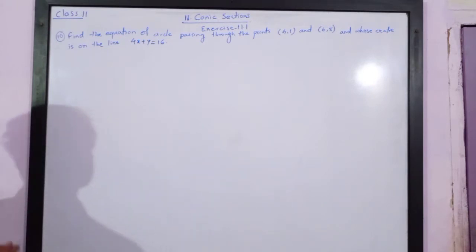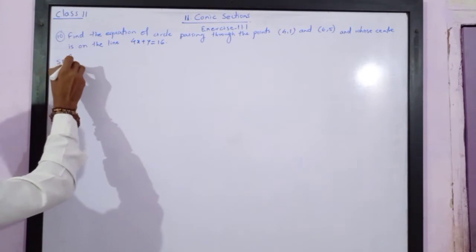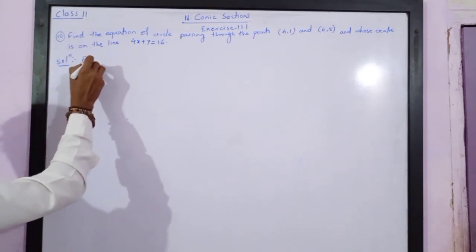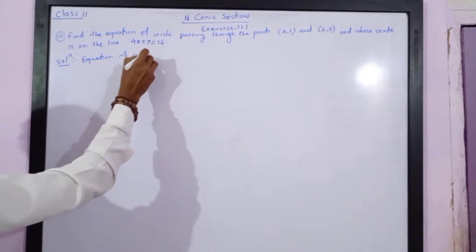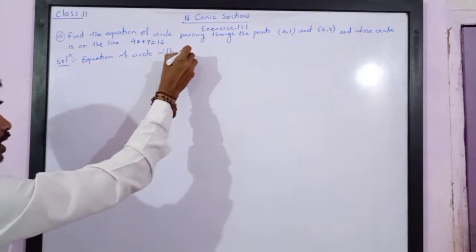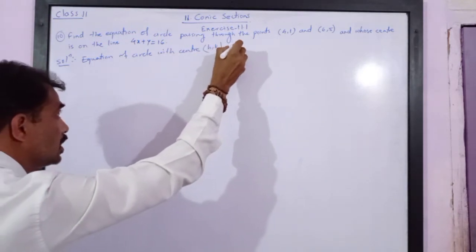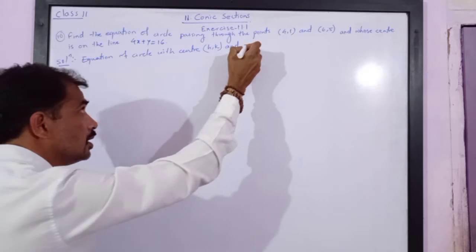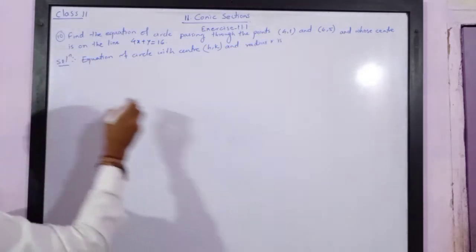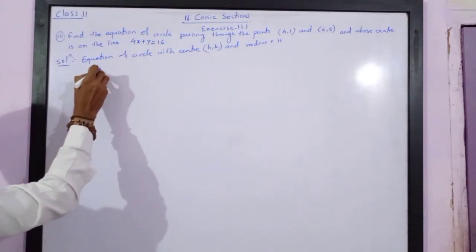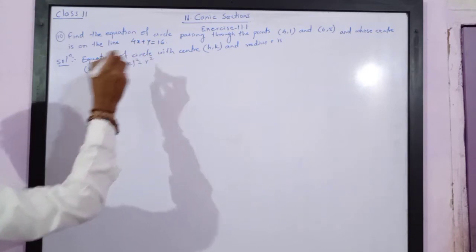Now, we know that the equation of circle with center (h, k) and radius r is: (x − h)² + (y − k)² = r².